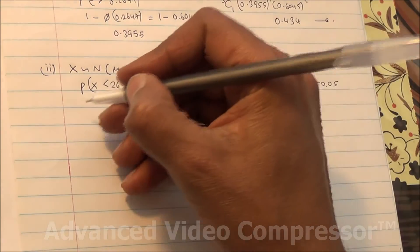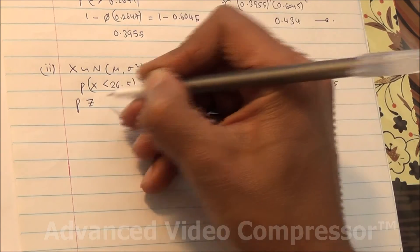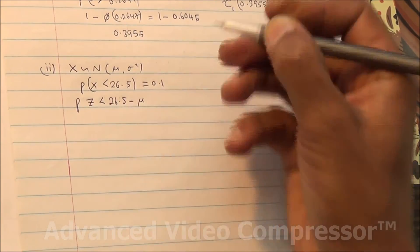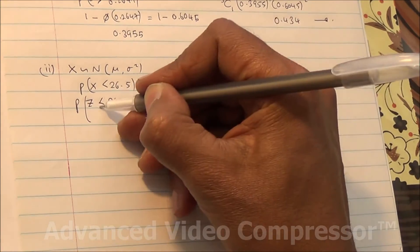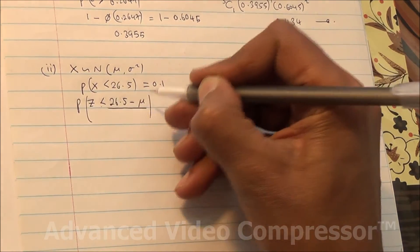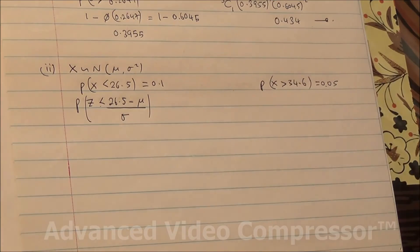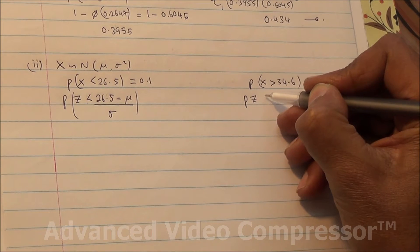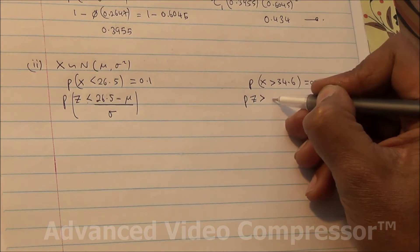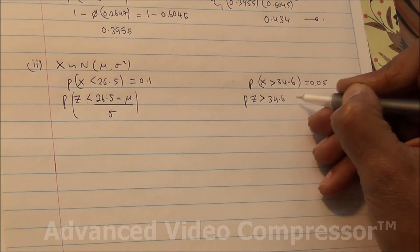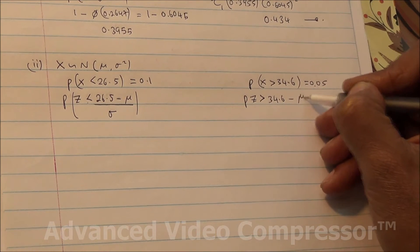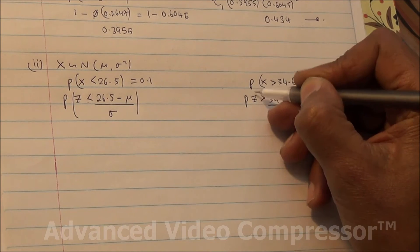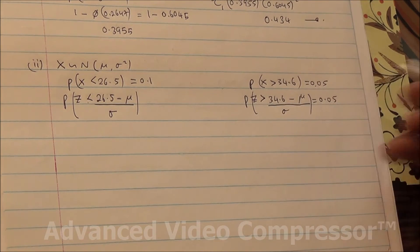Standardizing: P(z < (26.5 - mu) / sigma) = 0.1. And P(z > (34.6 - mu) / sigma) = 0.05. Since 26.5 is below the mean, the z-value will be negative; 34.6 is above the mean, so that z-value will be positive.